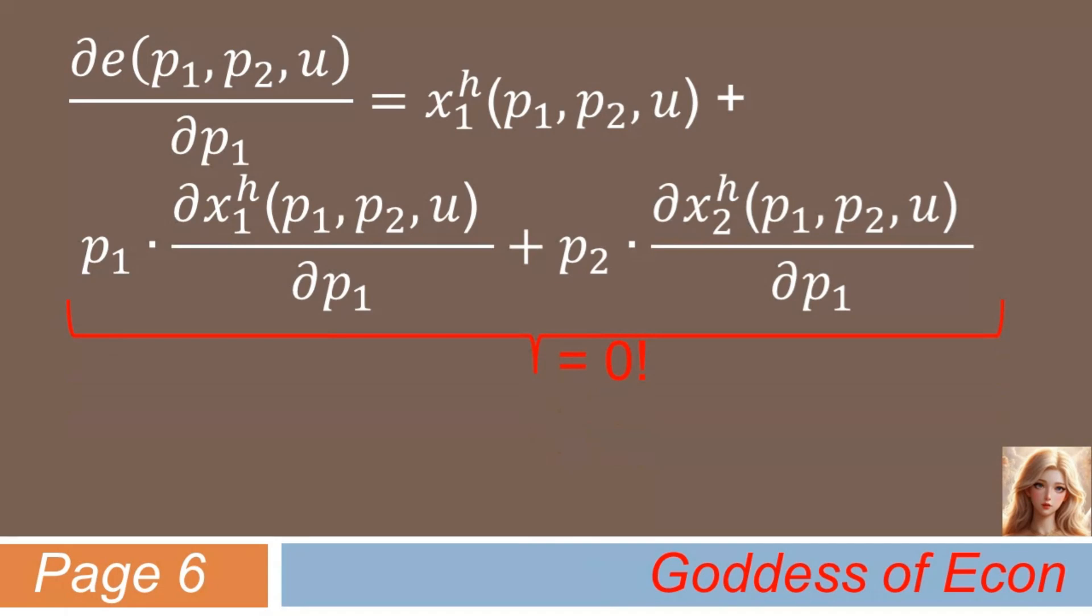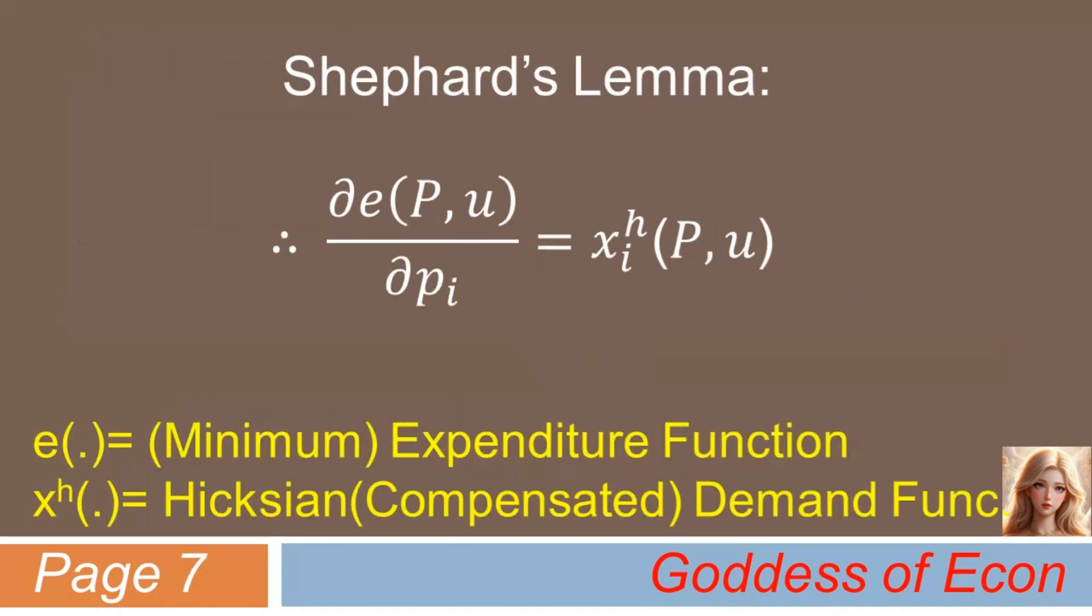So, the derivative of the expenditure function with respect to P1 is simply the Hicksian demand function for good 1, which is what Shepard's Lemma states. Shepard's Lemma can indeed be extended to the multi-goods case. If you differentiate the expenditure function with respect to the price of any good i, you get the Hicksian demand function for that particular good.